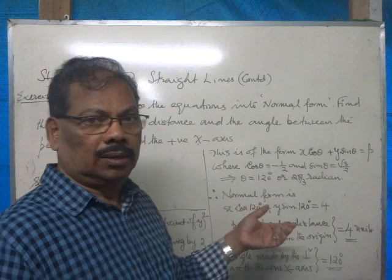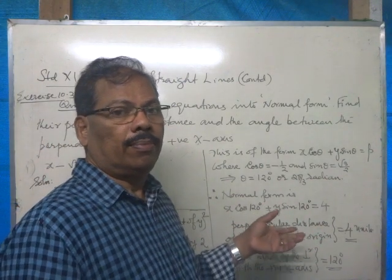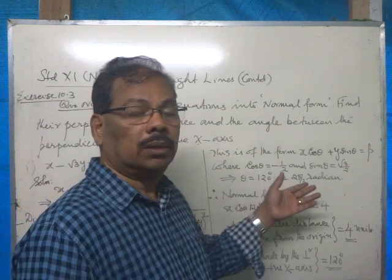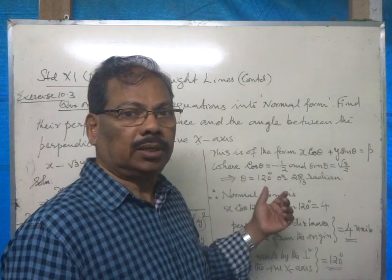And what is that angle? Cos ratio negative half and sin ratio root 3 by 2. You know, it is 2 pi by 3. That is 120 degrees.